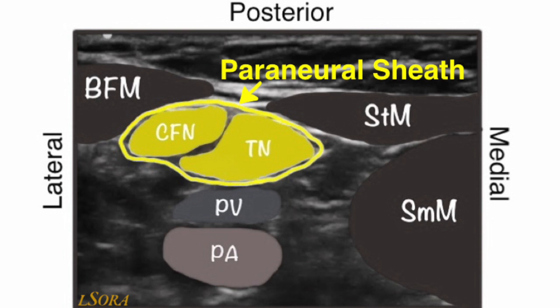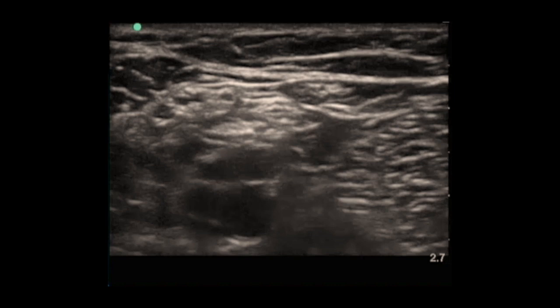They are, however, contained within a common paraneural sheath. Our understanding of anatomy nowadays suggests that the optimum block is one where local anaesthetic is administered underneath the paraneural sheath, but outside the epineurums of both the tibial and common fibular nerves.